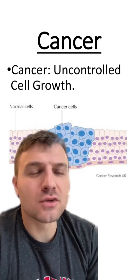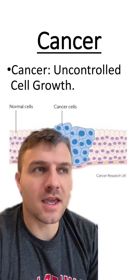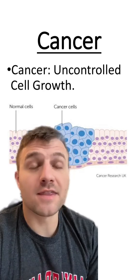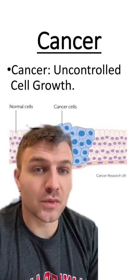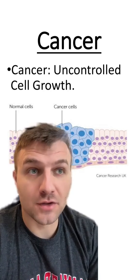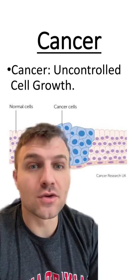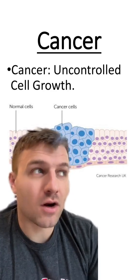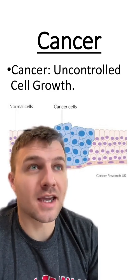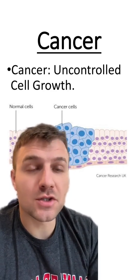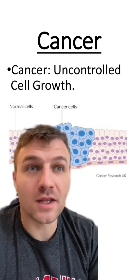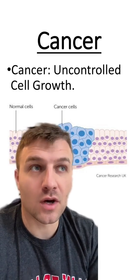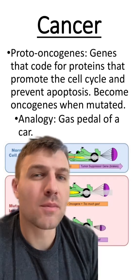Cells will become cancerous because they acquire mutations, and these mutations will cause the cell to then go through more mitosis. There are two main types — or two main locations — of mutations that will cause cells to become cancerous.